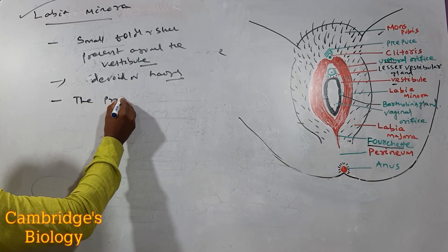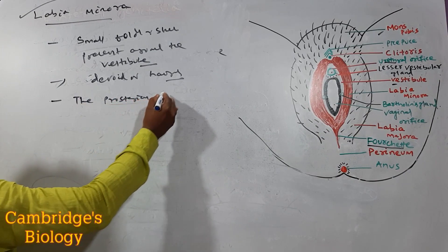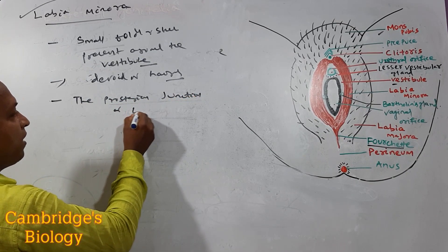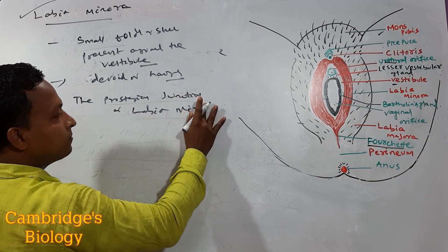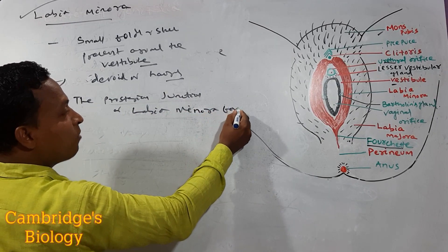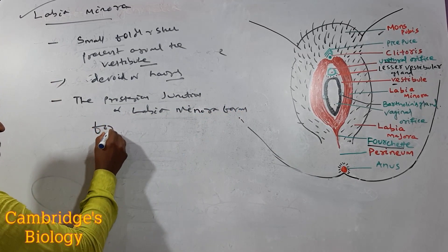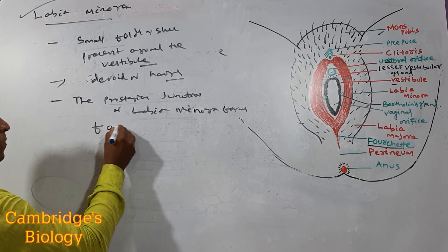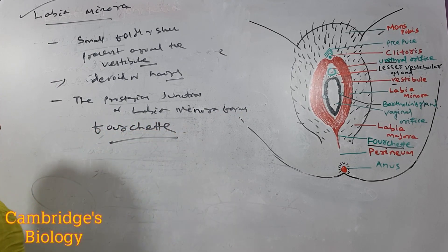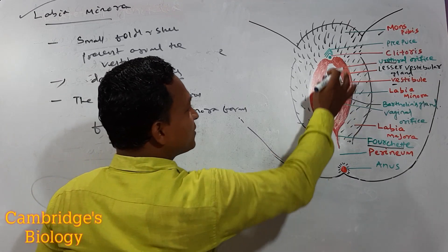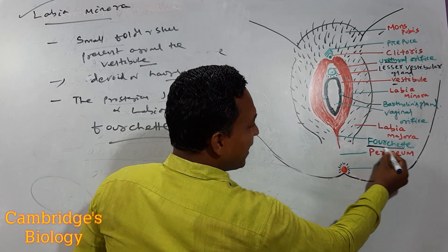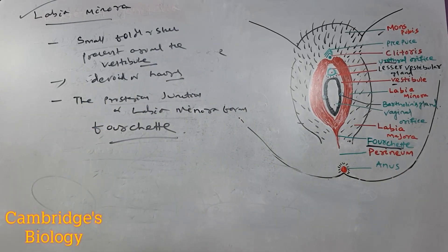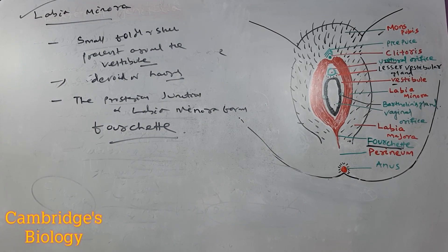The posterior junction of the labia minora forms the fourchette. The anterior part and the posterior junction forms the fourchette. This is the basic fundamental about labia minora.